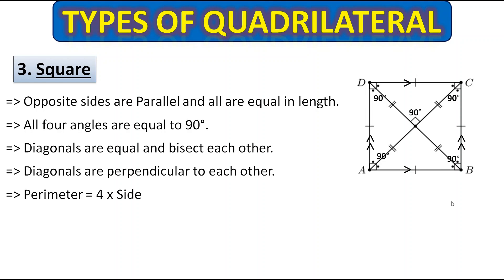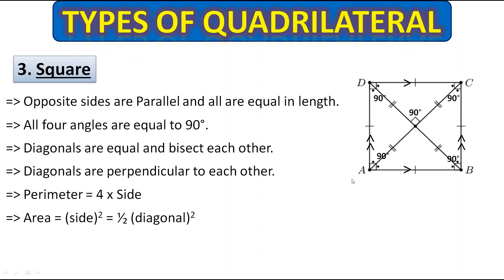To find the perimeter of a square, multiply 4 by one side. To find the area, multiply side by side — or you can square the side. If you know the diagonal length instead, square the diagonal and halve it to get the area. To find the length of the diagonal, multiply the side by √2.